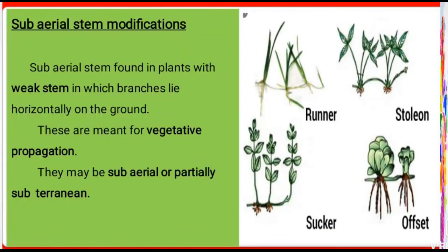The next very important title is sub-aerial stem modification. Sub-aerial means existing and formed in the open air. Some plants exist formed in the open air, just above the underground level. Sub-aerial stems are found in plants with weak stems, in which branches lie horizontally at or near the ground level.